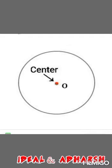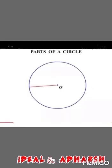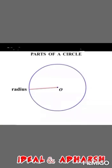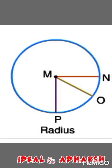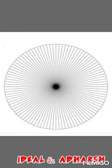Next, radius. Radius is an interval joining the center to the circumference. The plural form of radius is called radii. Radius is half of the diameter. All radii are equal in length on the circle. A circle has an infinite number of radii.